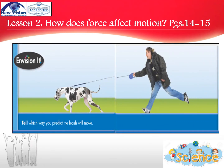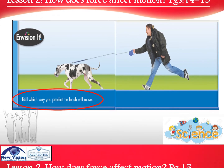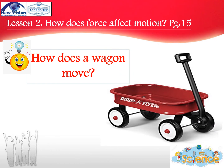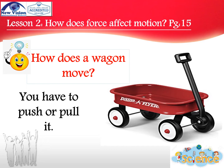Now, please look at this picture in your textbook, pages 14 and 15. The question is: tell which way you predict the leash will move. Your answer will be: the leash will move in the direction that the dog pulls it. Look at this picture in front of you — you can see a wagon. The question is: how does a wagon move? Your answer will be: you have to push or pull it.